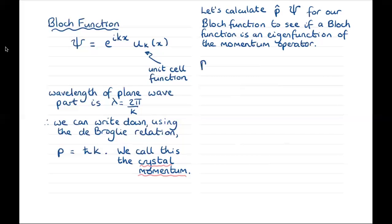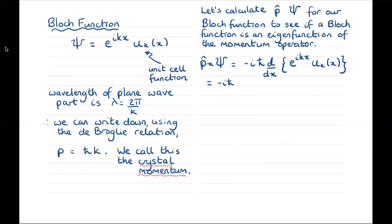We proceed in just the same way as we did for the free electron, operating on our wave function with minus i h-bar d by dx. But this time, rather than operating on only e to the ikx, we're operating on the product e to the ikx times u sub k of x, which also depends on x. So we have to take the derivative of the product. This gives minus i h-bar times the derivative of the first term, ik times e to the ikx times u sub k of x, plus e to the ikx times d by dx of u sub k of x.